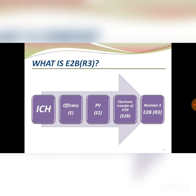The second example is the country of incidence. For example, a patient experienced an event in country one, then traveled to country two and had other events there. In R2, the country of incidence can only be mentioned at the case level, so we would have to create a new case and process it separately. But in R3, this can be handled within the same case because there is a provision to enter the country of incidence at the event level.